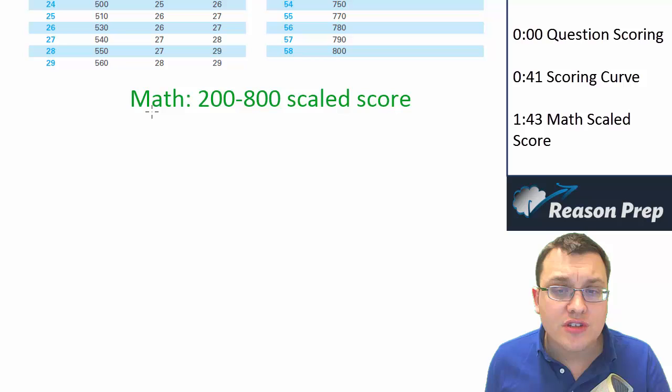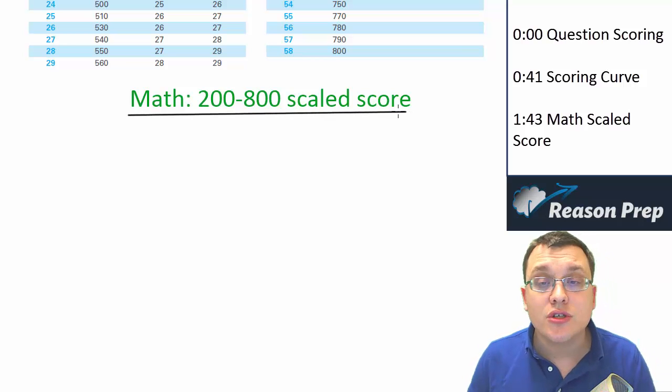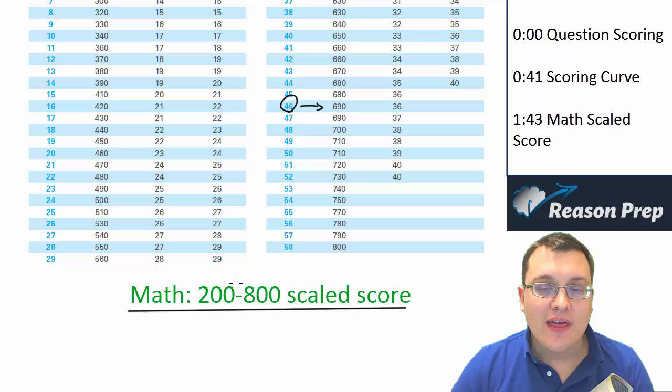And then finally, of course, this is your scaled score which is on the score reports from 200 to 800 on the SAT. 800 being perfect of course, 200 being not perfect, and then higher is better.